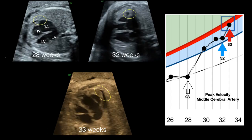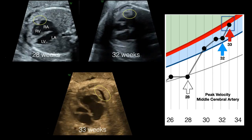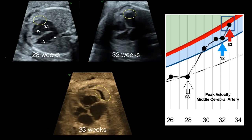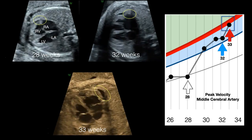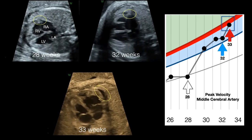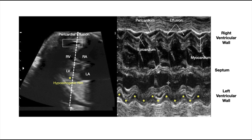These clips illustrate the evolution of a pericardial effusion in a fetus with anti-Kell antibody who subsequently required delivery because of fetal anemia. At 28 weeks, the middle cerebral artery peak velocity was normal, and the four-chamber view demonstrates pericardial fluid at the atrioventricular junction, which is normal. At 32 weeks, the peak velocity suggested mild fetal anemia and a pericardial effusion is observed dissecting down the right ventricular wall, representing the early stage of a pericardial effusion. At 33 weeks, the peak velocity is in the moderate range for fetal anemia and the pericardial effusion is now larger along the right ventricular wall. M-mode can be used to differentiate between a hypoechogenic rim and a true pericardial effusion: the M-mode demonstrates separation of the epicardium from the pericardium only during ventricular systole and diastole along the right ventricular wall, while the hypoechogenic rim remains the same size during systole and diastole, as represented by the yellow stars.